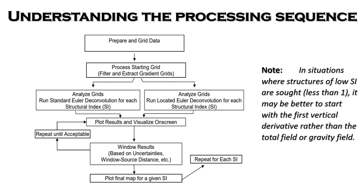If you do not get desirable results from the windowed results, you continue to repeat the entire process until you find something acceptable. Note that in situations where structures of low structural index are sought — especially those less than one — it may be better to start with the first vertical derivative, that is the dz, of the potential field data rather than the total field, for example for magnetic or gravity data.